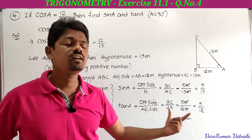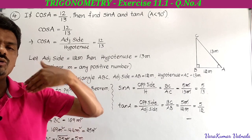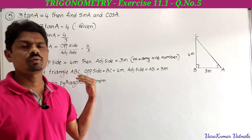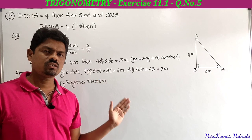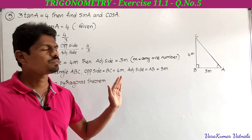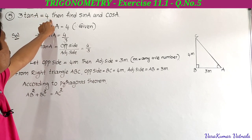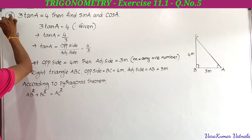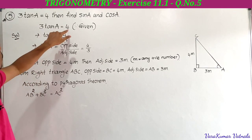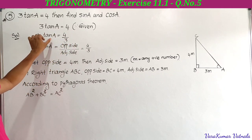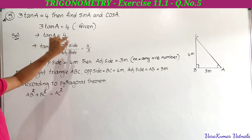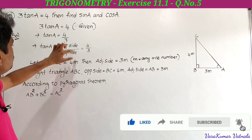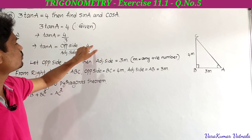This is the fourth problem. Next, the fifth problem in exercise 11.1 — asked for two marks, very important. He has given 3 tan A equals 4. Find sin A and cos A. Taking 3 to the right side, tan A equals 4 by 3. Tan A equals opposite side by adjacent side, which equals 4 by 3.